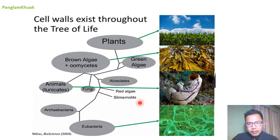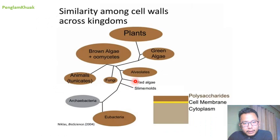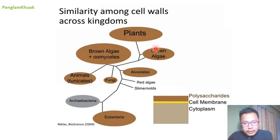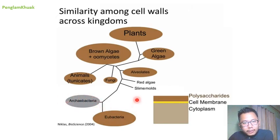Throughout the tree of life, cell wall exists. If you see this picture, there is a similarity among cell walls across kingdoms. In case of plants, green algae, alveolates, fungi, brown algae, animals, and eubacteria, the composition of cell wall shows similarity — mostly they are made up of carbohydrate polymers. But in case of archaebacteria, the cell wall is totally different.